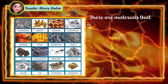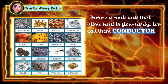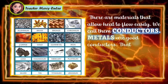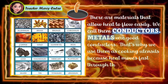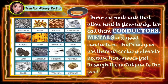There are materials that allow heat to flow easily. We call them conductors. Metals are good conductors. That's why we use them as cooking utensils — because heat moves fast through the metal pan to the food.